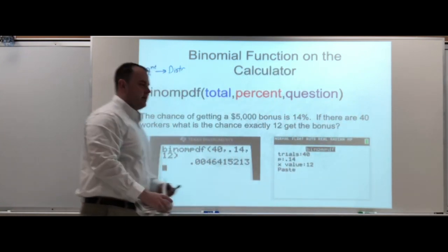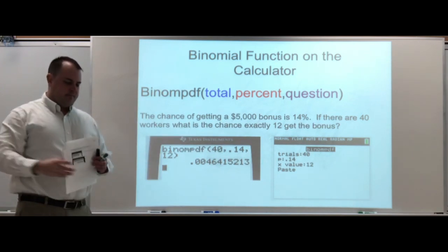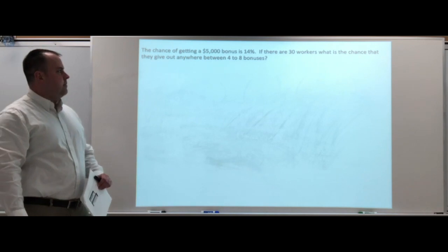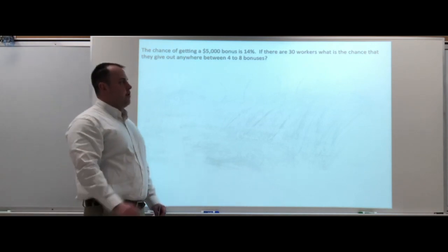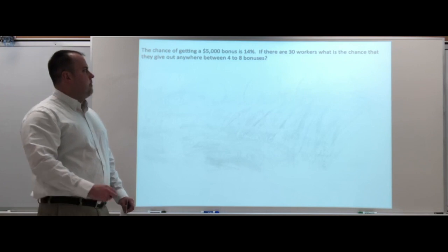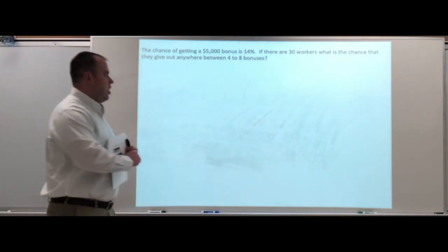Now this was exactly 12. The chance you get a $5 bonus is 14%. If there are 30 workers, what is the chance they give out anywhere between four to eight bonuses? Now we're doing one of those ranges. Our r in this case is four, five, six, seven, eight.